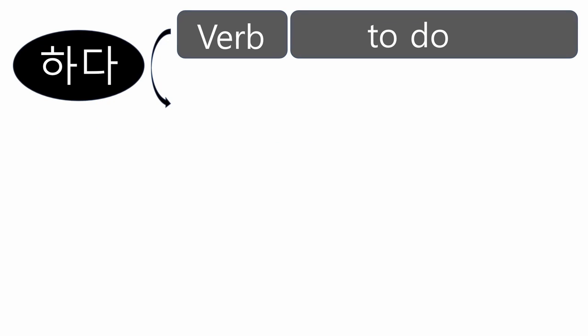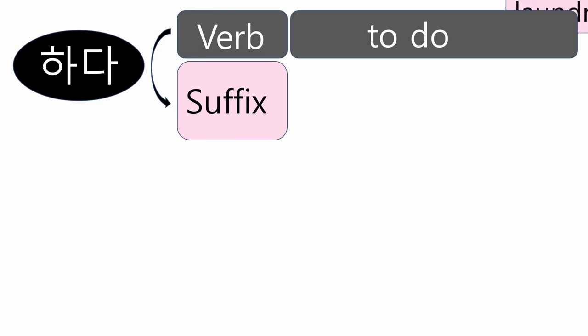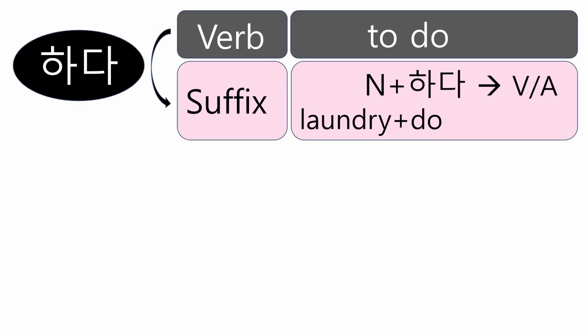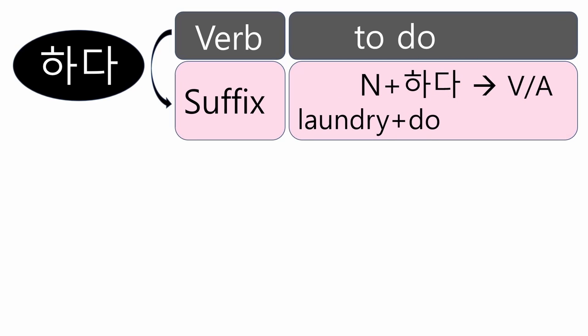The meaning of 하다 is 'to do' in English, so 하다 is a verb. And also 하다 is used as a suffix. If you add 하다 to a noun, it becomes a verb or an adjective. It's very similar to the English 'do' as an idiom with a specific noun, like 'do the laundry,' 'do one's homework,' 'do one's exercise,' 'do one's duty.'